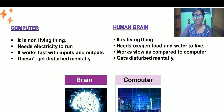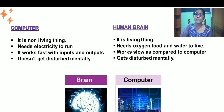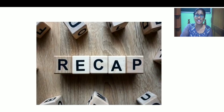Also, a computer works very fast with input and output and gives us accurate results, while the human brain is not as fast compared to computers and cannot always give correct outputs. A computer does not get mentally and physically disturbed, while the human brain can.